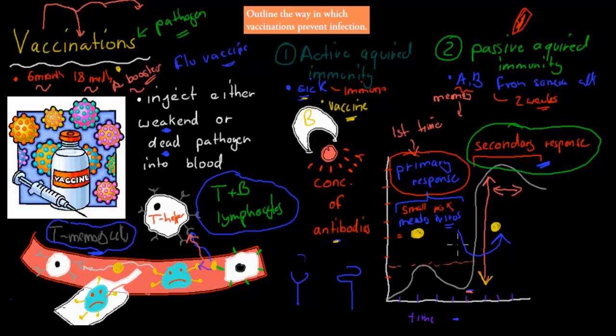Active immunity is when you're exposed to a pathogen, either in dead form through vaccines, or in live form when you get sick. We want vaccines for deadly infections because we might not survive the first time. Passive acquired immunity is when antibodies produced by B cells are pumped directly into our blood, giving immunity for a couple of weeks before they go away. It's called passive because we're not actually infected by the pathogen.